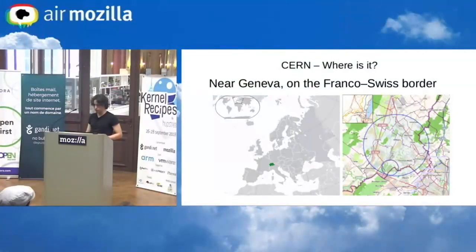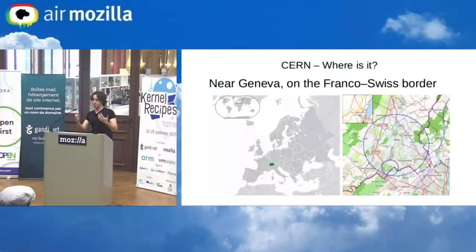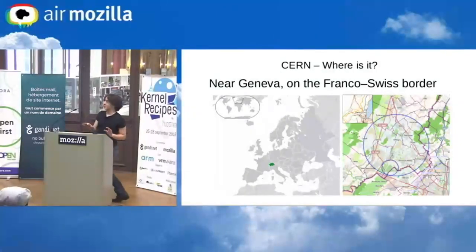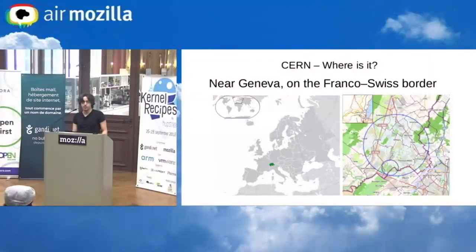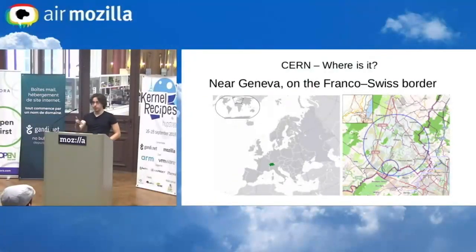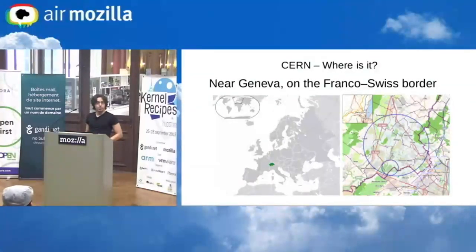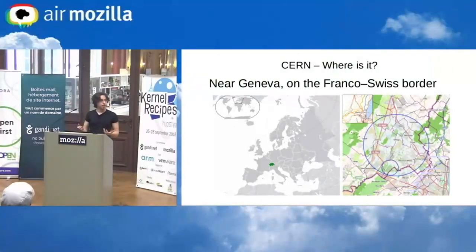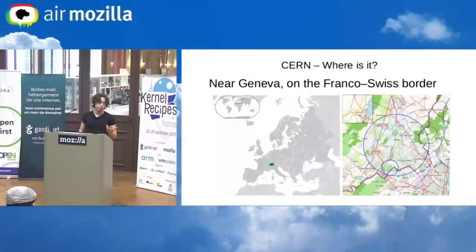I'm not speaking here officially for CERN — I don't know all the rules, so if I make any mistakes, don't blame me. But one thing you may not know: the police of France or Switzerland, even the firefighters, have to ask permission from the Director General to enter the organization, because it's treated somewhat like a university campus where normal authorities have limited jurisdiction.